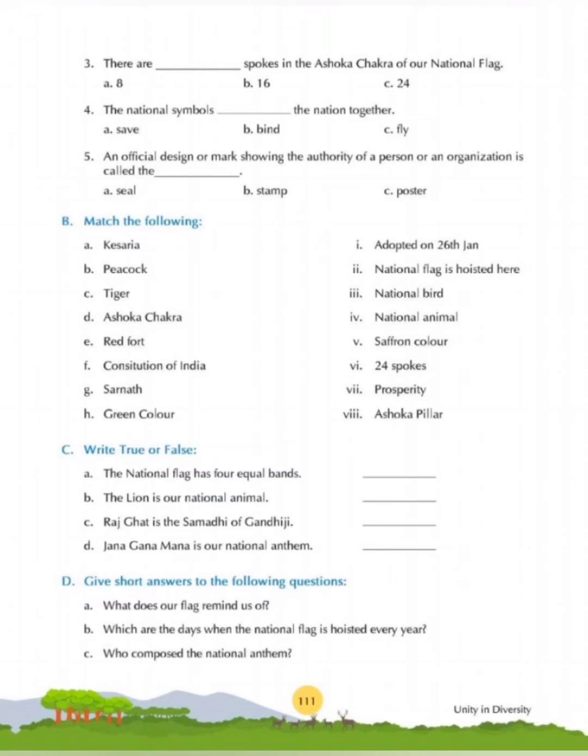Question 4: The national symbols dash the nation together — save, bind, or fly? The national symbols bind the nation together. Question 5: An official design or mark showing the authority of a person or an organization is called the — seal, stamp, or poster? It is called the seal.